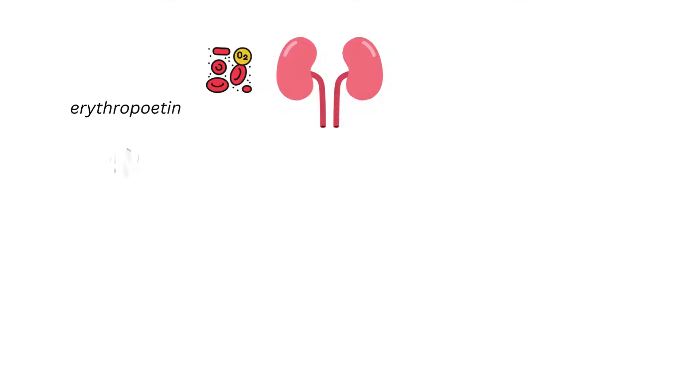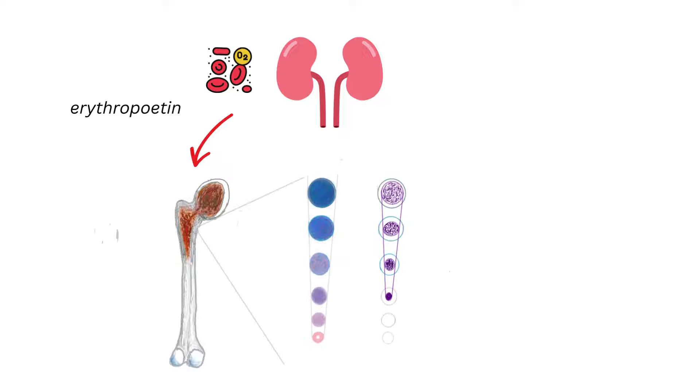Hemoglobin synthesis is part of erythropoiesis, where low blood oxygen levels stimulate the kidney to secrete erythropoietin hormone. Hypoxia from anemia or chronic lung disease are often the initiators of erythropoietin secretion, where the target tissue is the bone marrow. Erythropoietin stimulates the bone marrow erythropoietin precursors to synthesize.